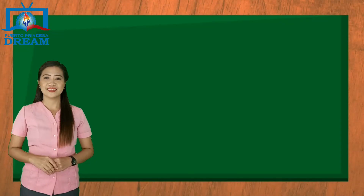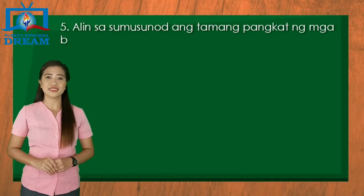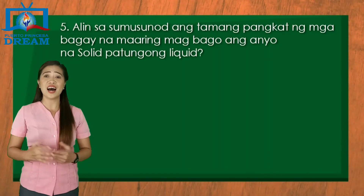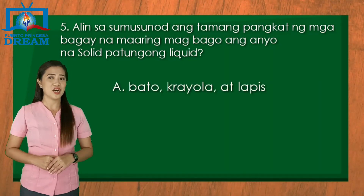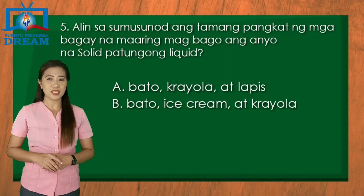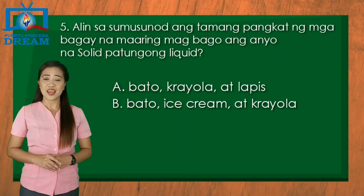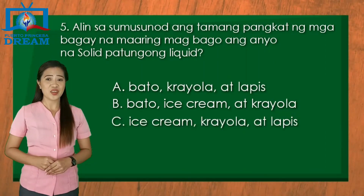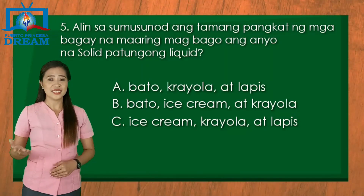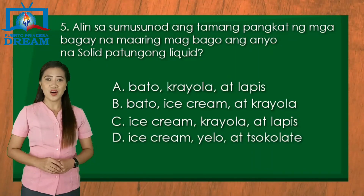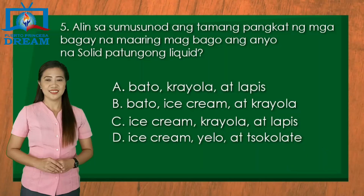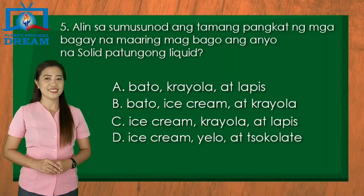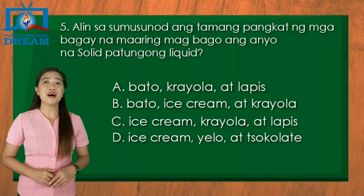Ikalima: alin sa sumusunod ang tamang pangkat ng mga bagay na maaaring magbago ang anyo na solid patungong likwid? A. Bato, crayola, at lapis. B. Bato, ice cream, at crayola. C. Ice cream, crayola, at lapis. D. Ice cream, yelo, at tsokolate. Ang tamang sagot ay D. Mahusay!